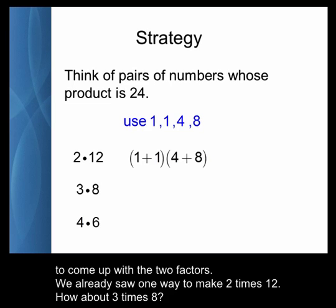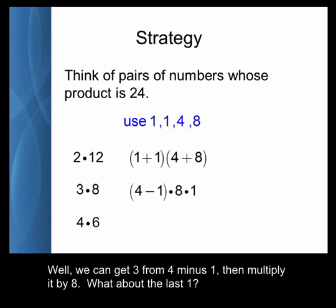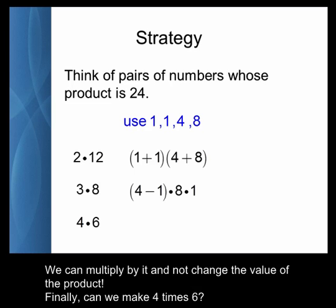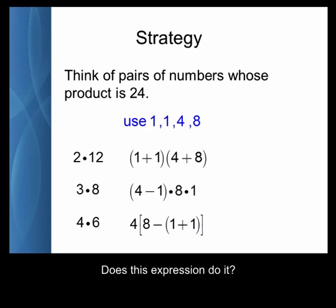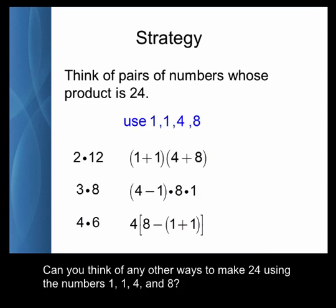We already saw one way to make 2 times 12. How about 3 times 8? We can get 3 from 4 minus 1, then multiply it by 8. What about that last 1? We can multiply by it and not change the value of the product. Finally, can we make 4 times 6? Does this expression do it? Can you think of any other ways to make 24 using the numbers 1, 1, 4, and 8?